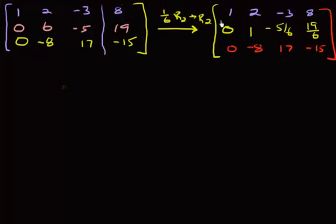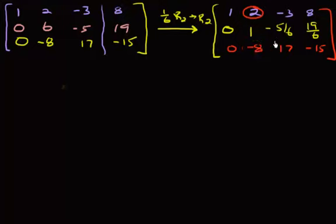Alright, so this is a one now. So now what we have to do is change this and this into zeros. Let's go ahead and do that.